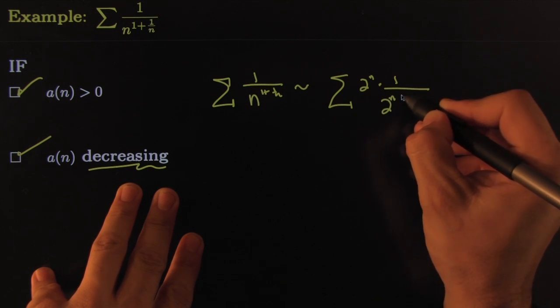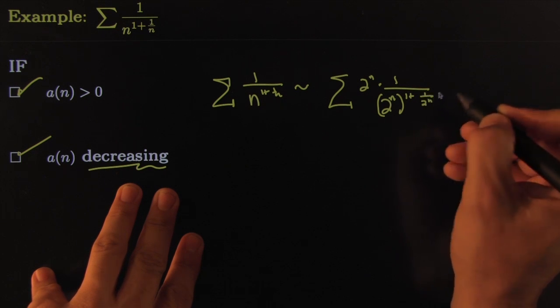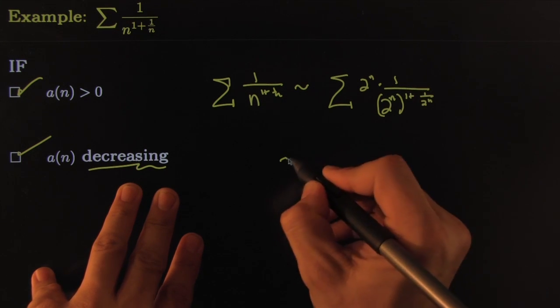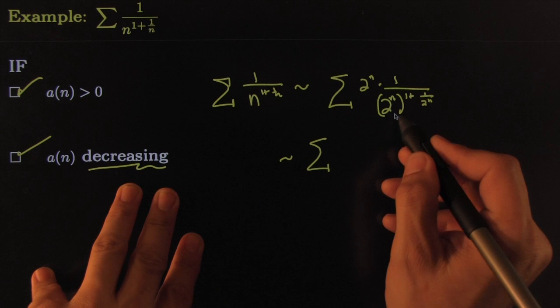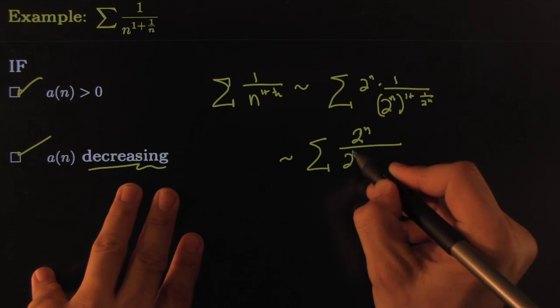Now we'll have to do a little bit of algebra here. I reckon that would be 2 to the n on the top, on the bottom that would be 2 to the n times 2.